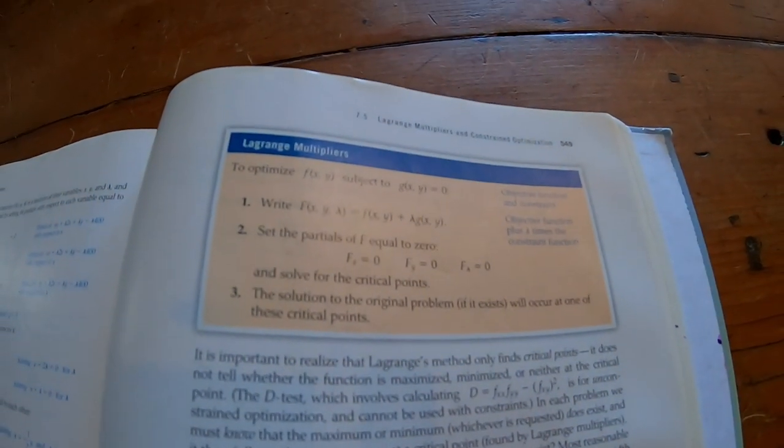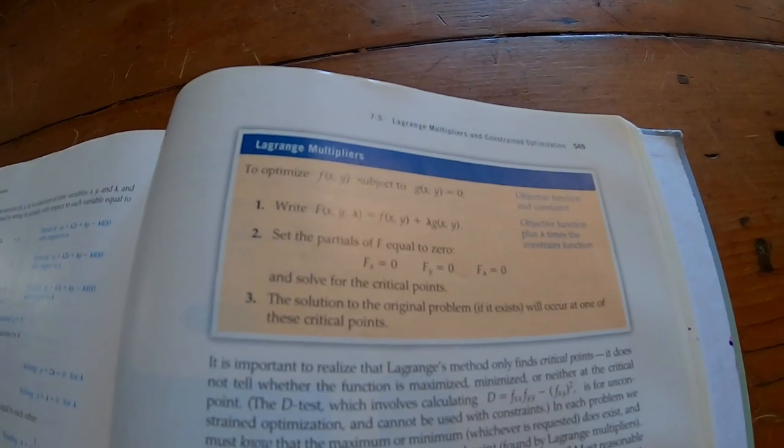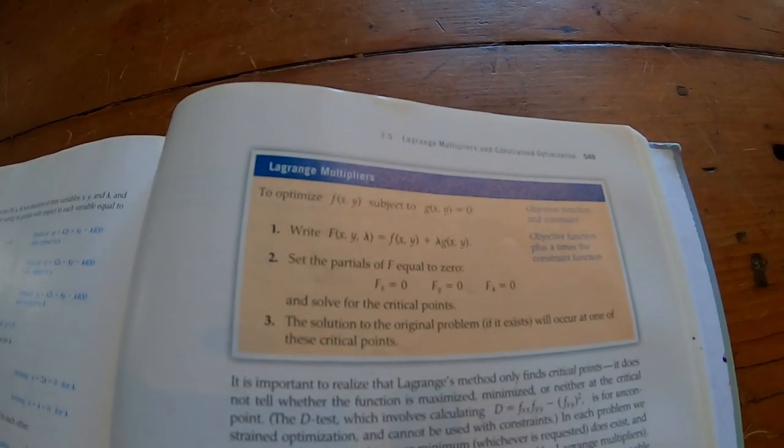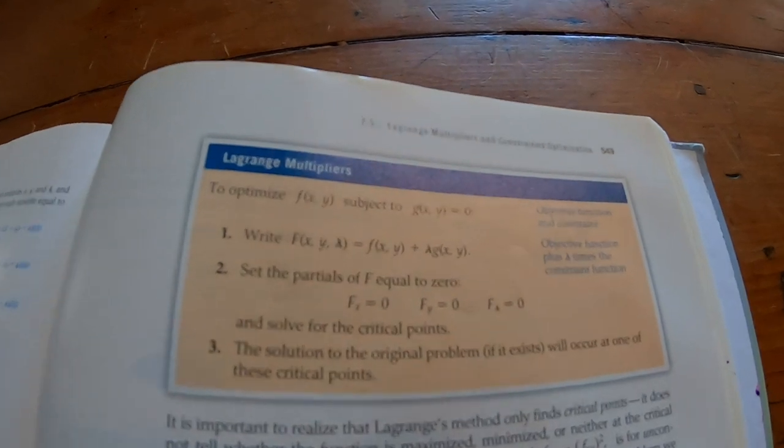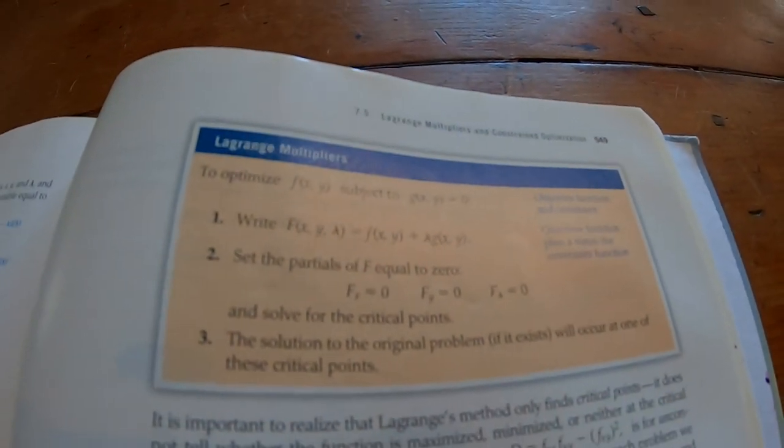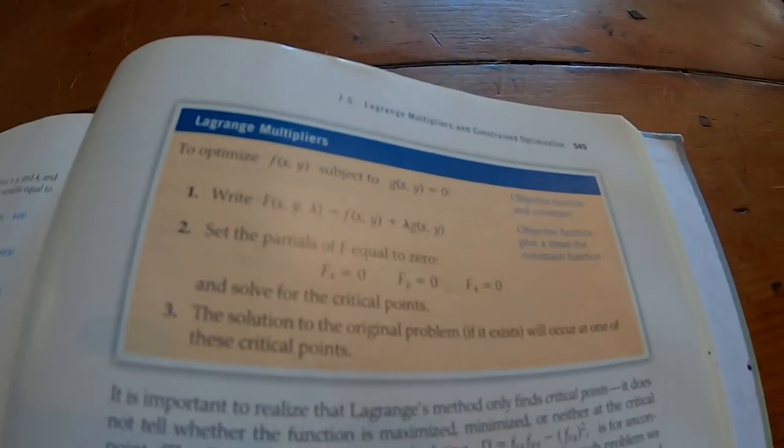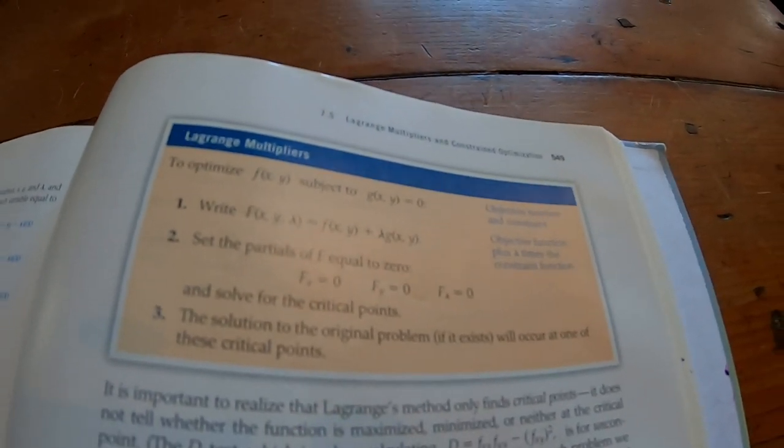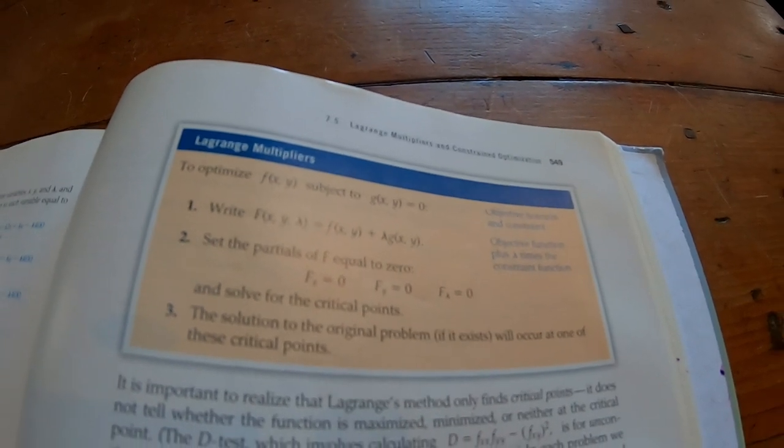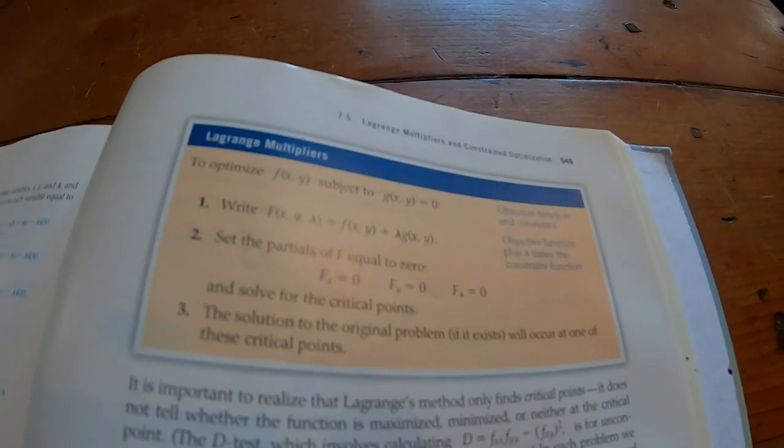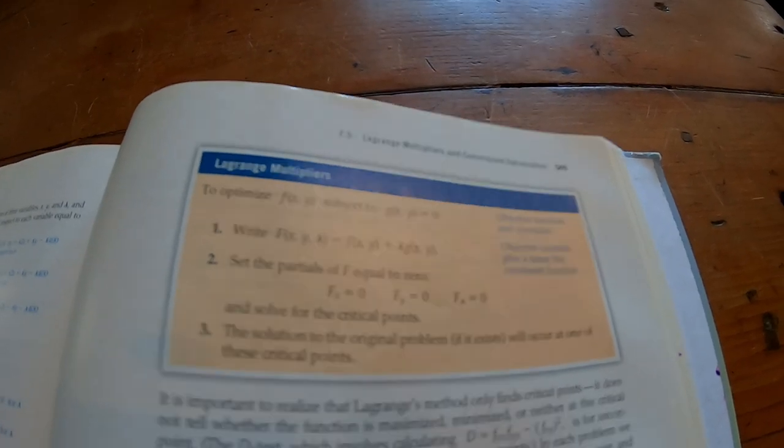It even has Lagrange multipliers, which many people even consider it to be an optional Calc 3 topic. I always cover it in my class because I think it's beautiful. And I have lots of videos on this too. And it's in this book, which is awesome because again, it's a calculus book with no trig and you can learn things that Calc 3 students are learning. So you can have no trig and learn Calc 3 stuff.